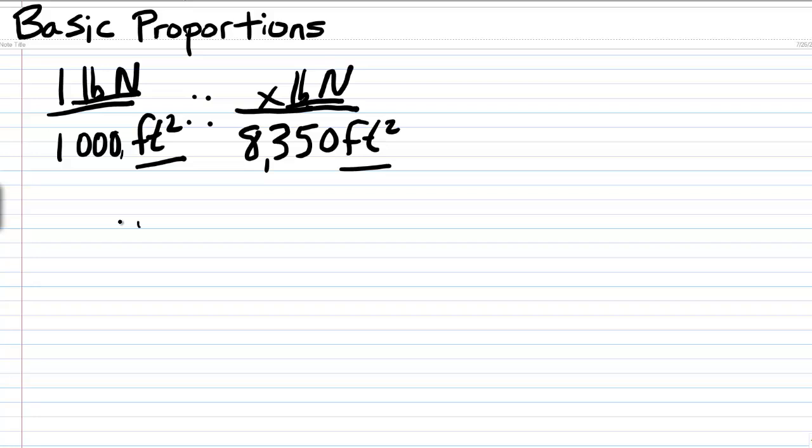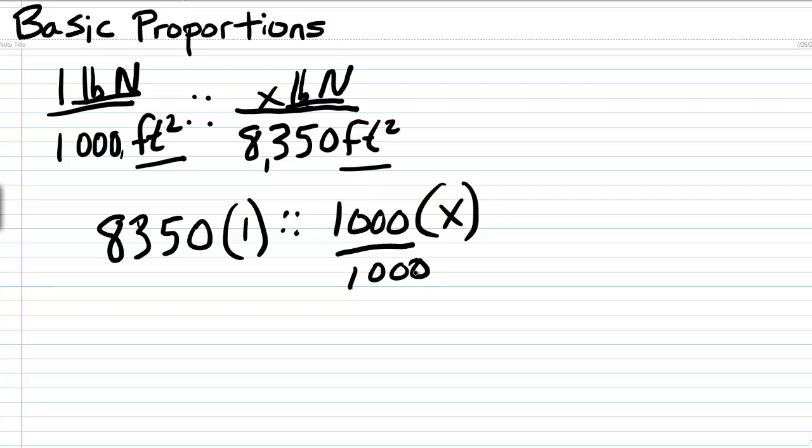I cross multiply, and I get 8,350 times 1 is to 1,000 times X. Divide both sides by this constant, 1,000. 8,350 divided by 1,000, the answer is 8.35 pounds of nitrogen equals X. So you need 8.35 pounds of nitrogen to cover 8,350 square feet at a level of 1 pound of nitrogen per 1,000 square feet.